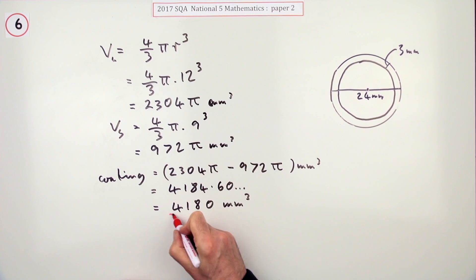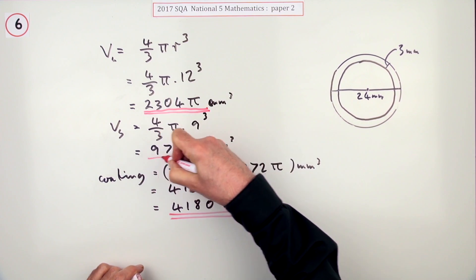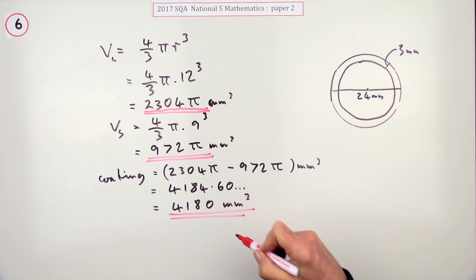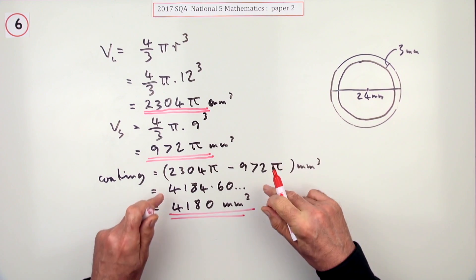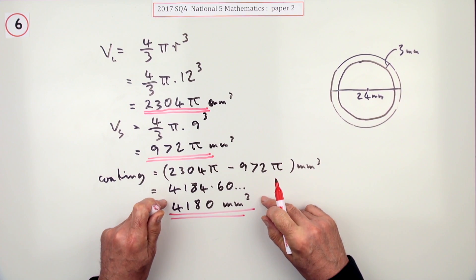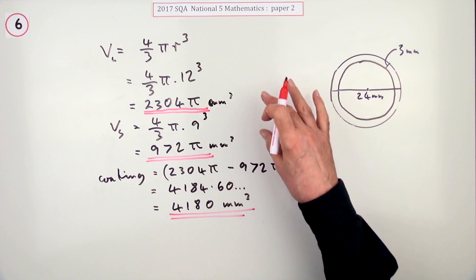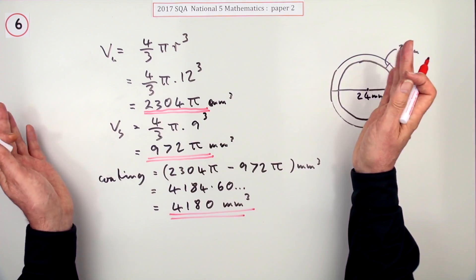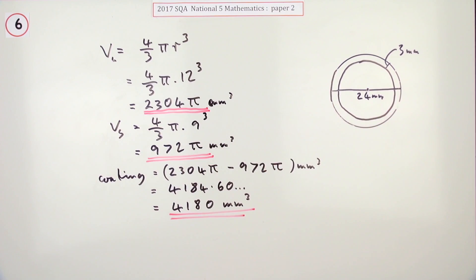Of course, you may well have pressed the button to get two decimals which you then put in here to subtract, and if you did that you could get a slightly different answer here because you've introduced some approximations. But it's all perfectly fine. The marking allows for quite a wide range in the approximations.